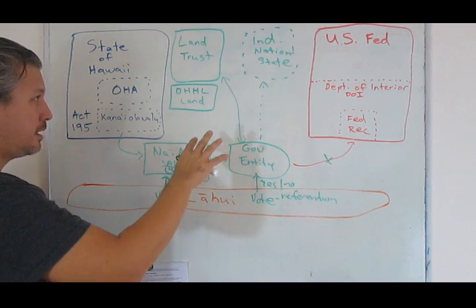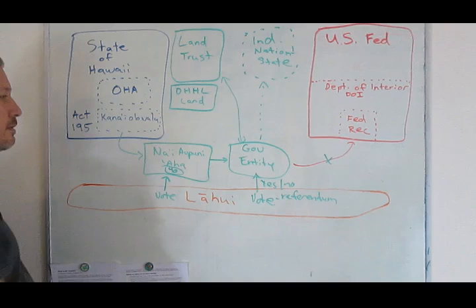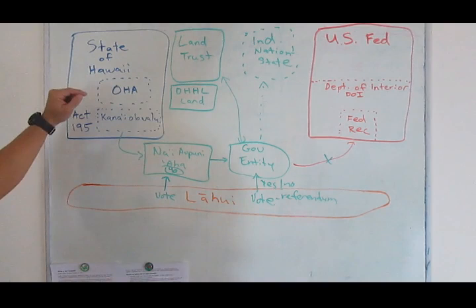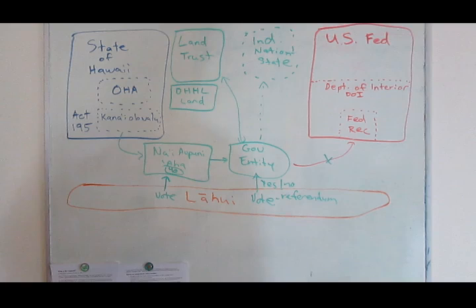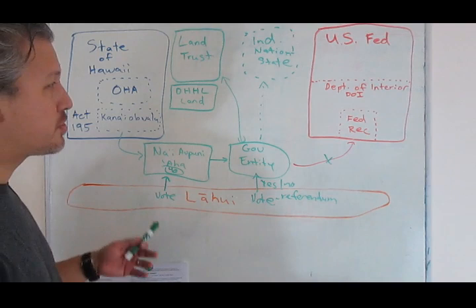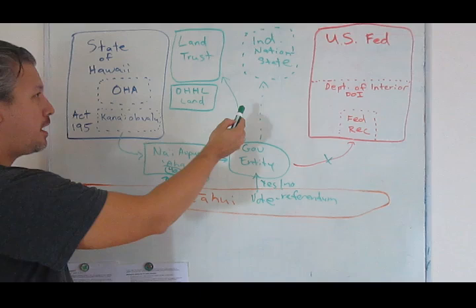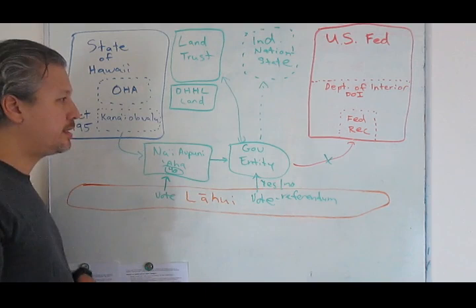I think basically the only thing that we get is Kaho'olawe, because the state of Hawaii already agreed to transfer that to a governing entity. So, we don't really get a lot, almost nothing. And the thing that we give up is we give up our claim for national sovereignty. Which is basically, if we go here, it's almost impossible to then reestablish our national sovereignty.